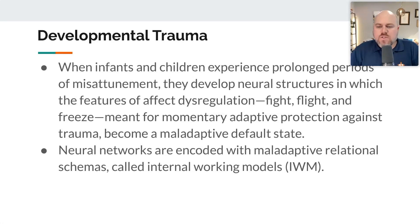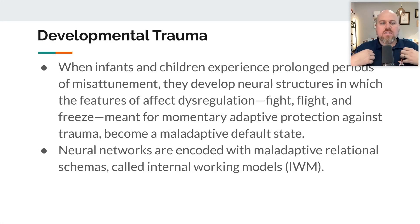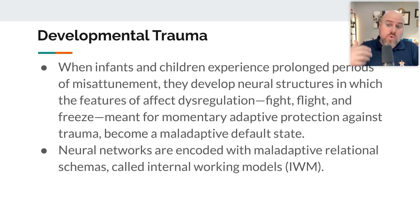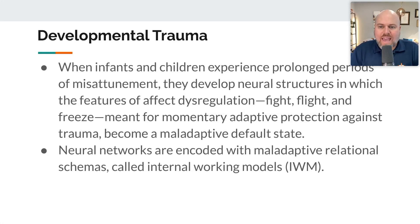When they don't get that, they develop neural structures in which the features of affect dysregulation — fight, flight, freeze, primarily — that are meant for momentary adaptive protection against trauma become a maladaptive default state. Fight, flight, and freeze are gifts; they are gifts in our wiring that protect us, but they're meant to be momentary. As soon as the threat is removed, we return to homeostasis. If a child doesn't experience attunement for prolonged periods of time, that fight, flight, or freeze state becomes the continually activated default rather than a momentary protective response.